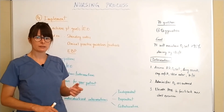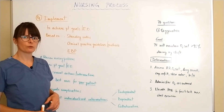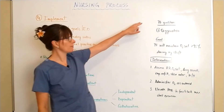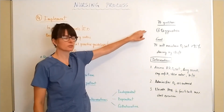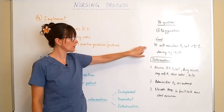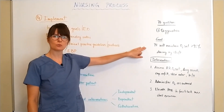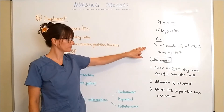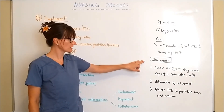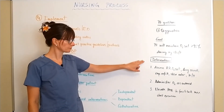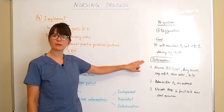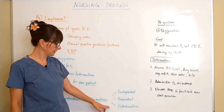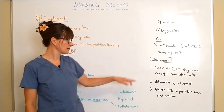Now let's apply this to the example we've been discussing. Our patient problem was oxygenation, and the goal was that the patient will maintain an O2 saturation greater than 95% during the shift. The interventions we come up with focus on independent, dependent, and collaborative categories.